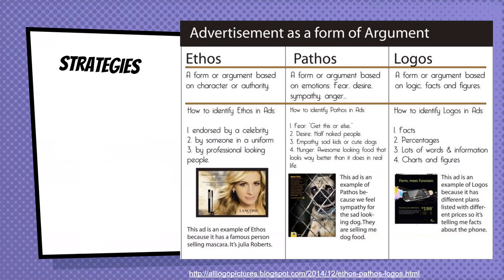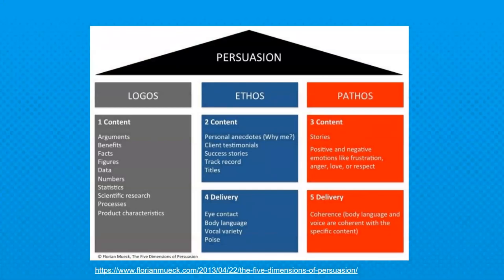And then logos is argument based on logic, facts, and figures. Something based on truth is a little bit more trustworthy than the other two, but we also consciously and subconsciously are persuaded by the others as well. You'll know it's logos when you see facts, percentages, actual true information, charts and figures, data backed up by peer review — all that jazz. Logos will have arguments, benefits, facts, figures, data, statistics, scientific research. It's the numbers thing, though it's not always numbers — it can be word descriptions too. But you don't get logos from your delivery; you only get logos from your content.